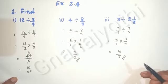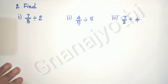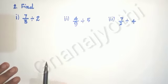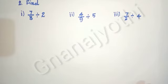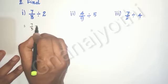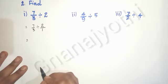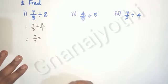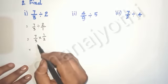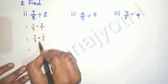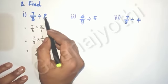Now let us see the next section. Here, compared to the previous questions where the whole number was to the left side of the division symbol, here the whole number is to the right side of the division symbol. The method is the same. So: 7/3 divided by 2 — 2 has no denominator, so we write it as 2/1. Reciprocal: division becomes multiplication, and 2/1 becomes 1/2. Multiplying: 7 × 1 = 7 upon 3 × 2 = 6. We get 7/6. You can also convert this improper fraction into a mixed fraction.